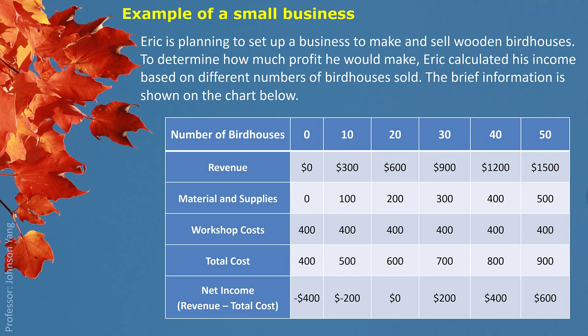We can see the workshop costs are 400, 400, 400 — the whole row, the number is not changing. That means this part of the cost is not changing with the quantity of the products. So we call it fixed cost. This cost must be something like rent for the workshop. No matter how many you produce, you use the same space, so the rent is not going to change with the quantity of production.